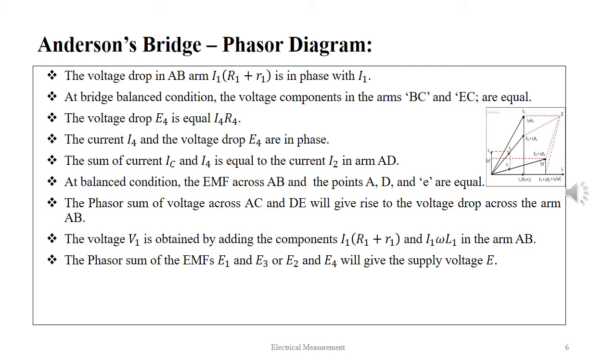At bridge balance condition the voltage components in the arms BC and EC are equal. The voltage drop E4 is equal to I4 R4. The current I4 and the voltage drop E4 are in phase.